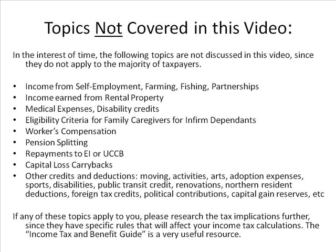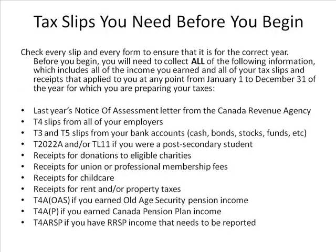The income tax and benefits guide is a very useful resource. Before you begin preparing your taxes, you will need the following tax slips. Check every slip and every form to ensure that it is for the correct year. You'll need to collect all income earned and all tax slips and receipts that apply to you from January 1st to December 31st of the year for which you are preparing your taxes. This includes: last year's Notice of Assessment from the CRA, T4 slips, T3 and T5 slips, T2022A and TL11 if you're a post-secondary student, receipts for donations, union and professional membership dues, childcare, rent and property taxes, T4A OAS, T4AP, and T4ARSP if applicable.